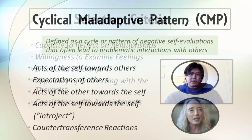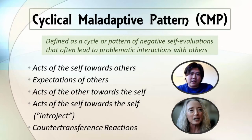A key element of the TLDP framework is the Cyclical Maladaptive Pattern, or CMP, defined as a cycle or pattern of negative self-evaluations of the client that often lead to problematic interactions with others. The CMP involves five main features: acts of the self towards others, expectations of others, acts of the other towards the self, acts of the self towards the self — also called the introject — and counter-transference reactions within the therapeutic relationship.